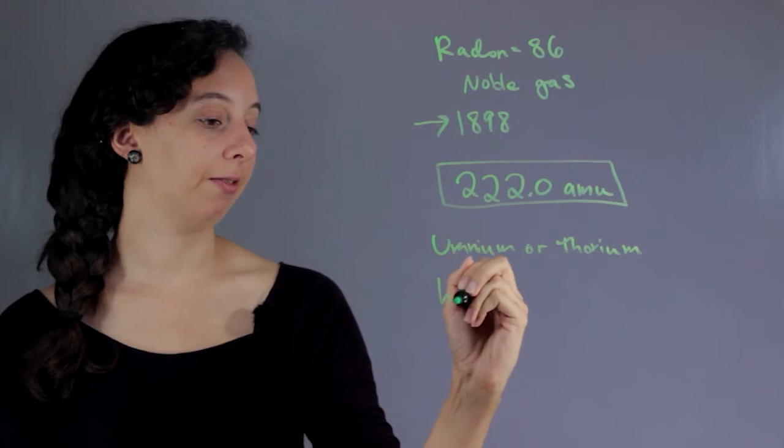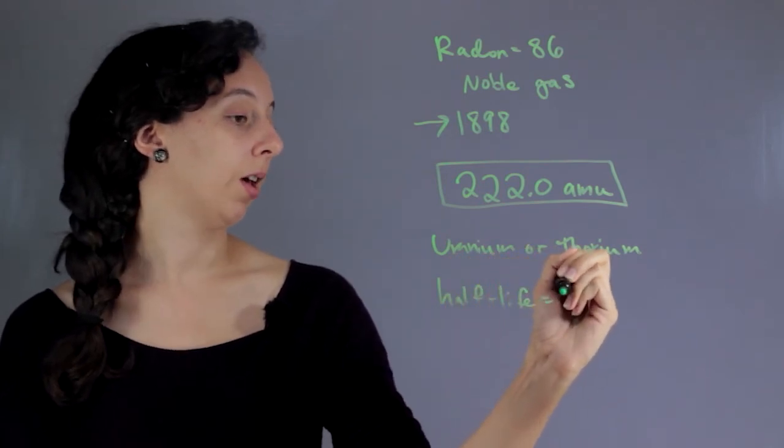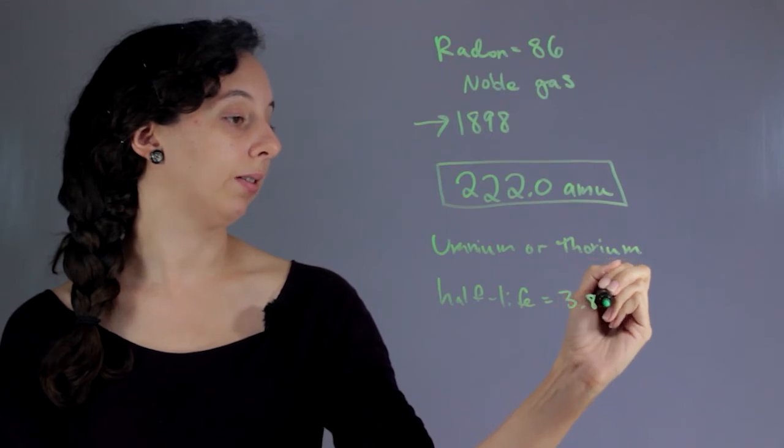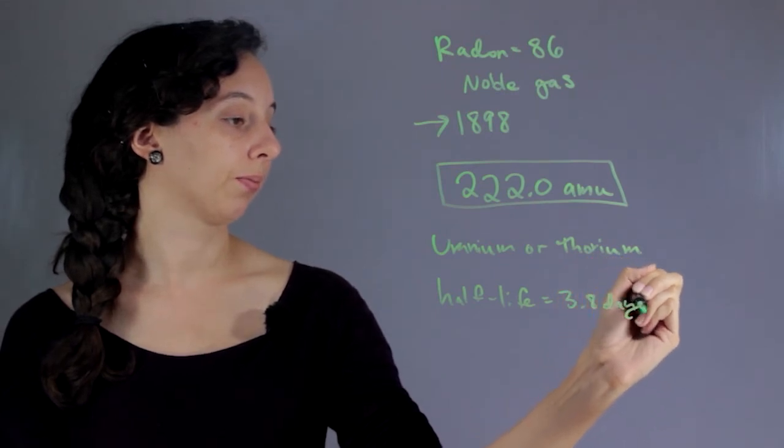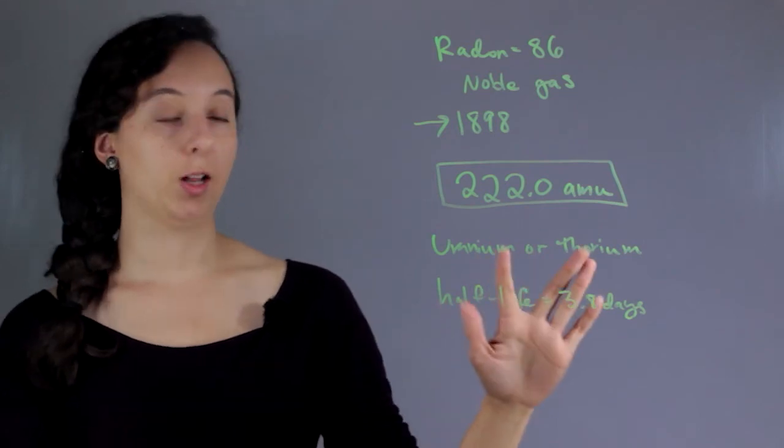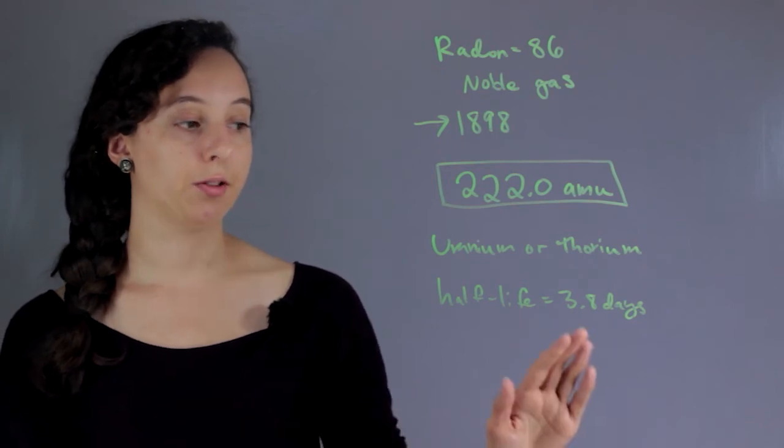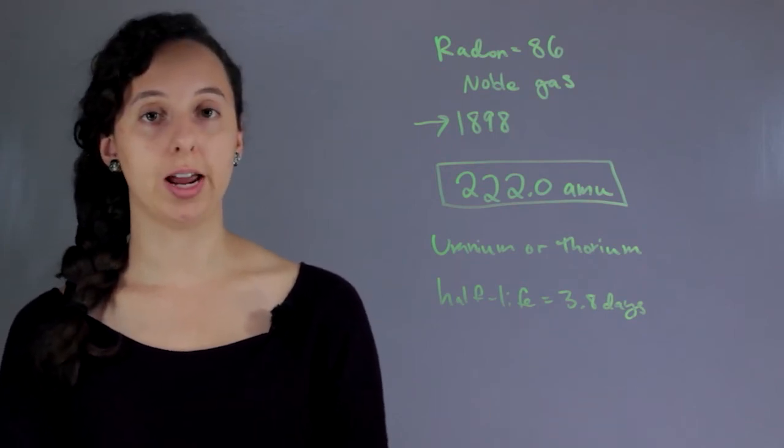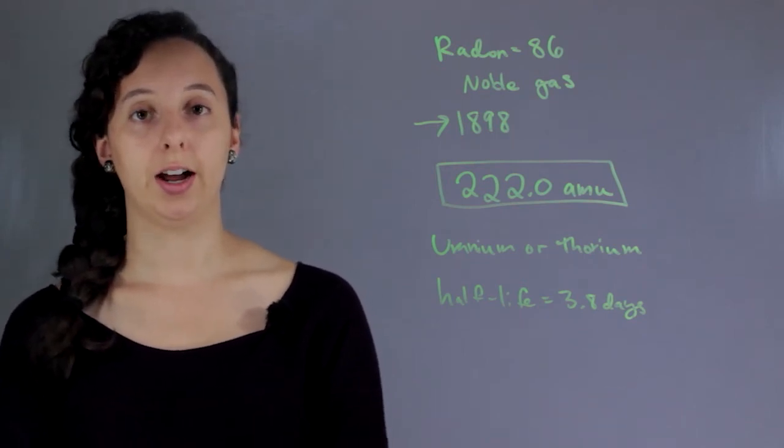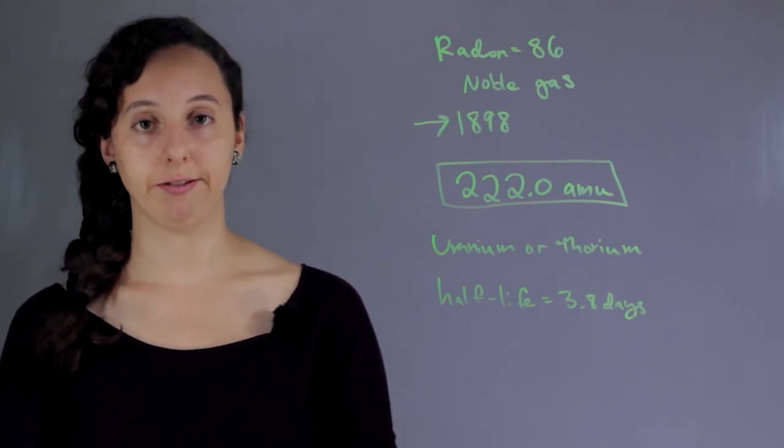And its half-life is 3.8 days. So basically, when these two heavy elements are decaying, they will create radon and then that radon will stick around for a little bit less than four days before half of it is gone, and then another four days before another half of it is gone.